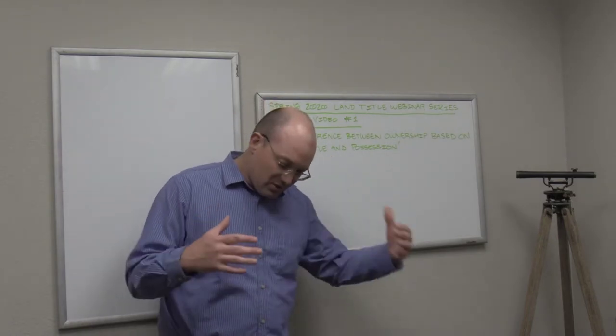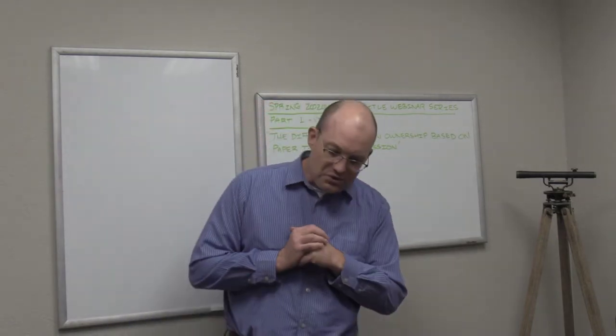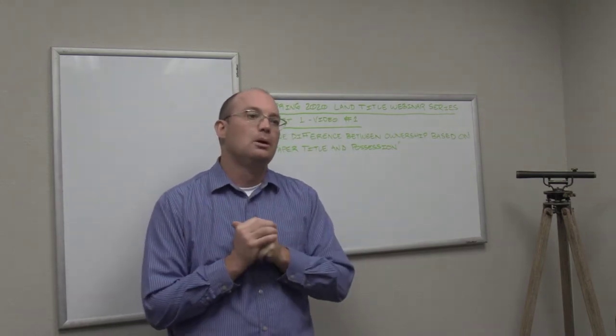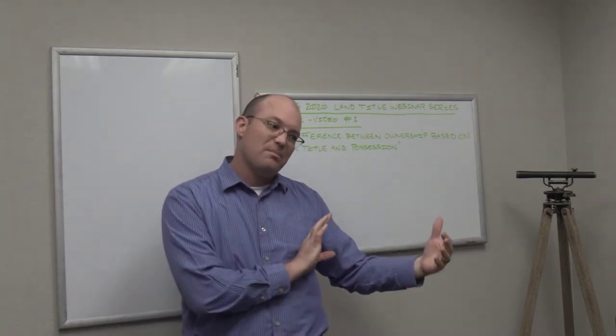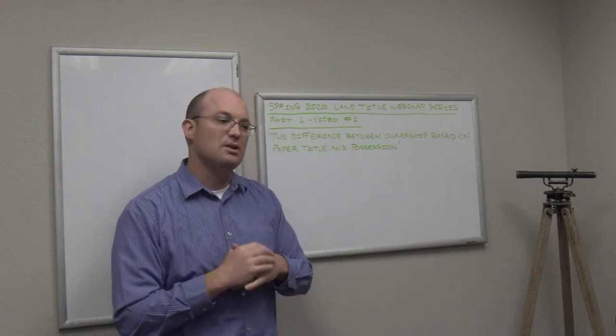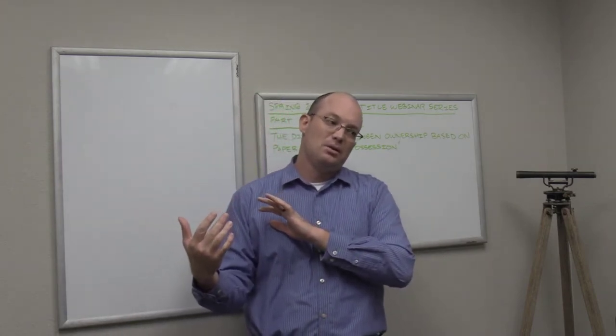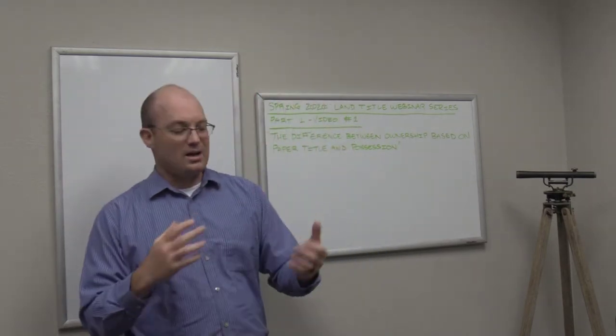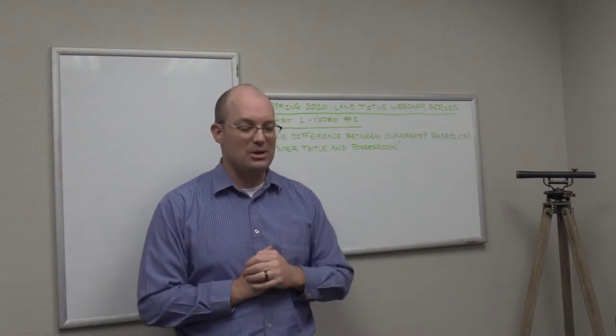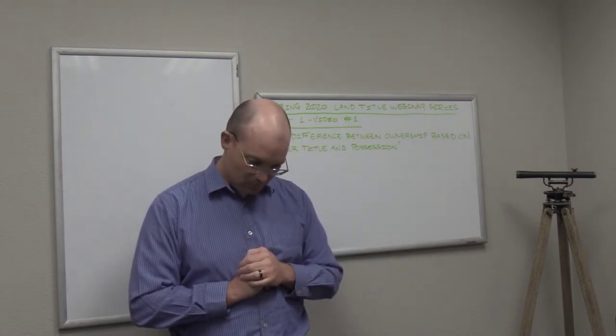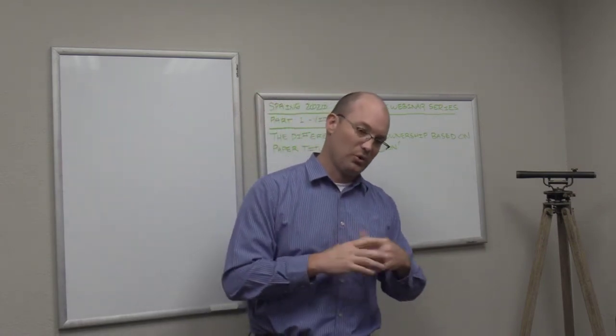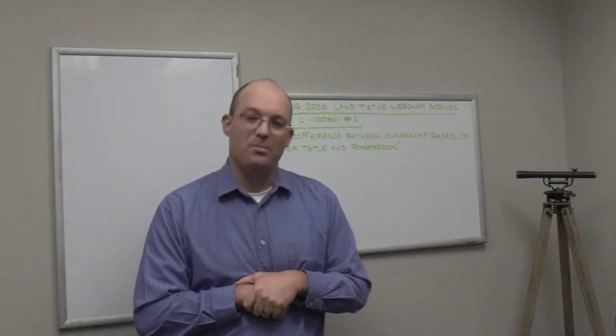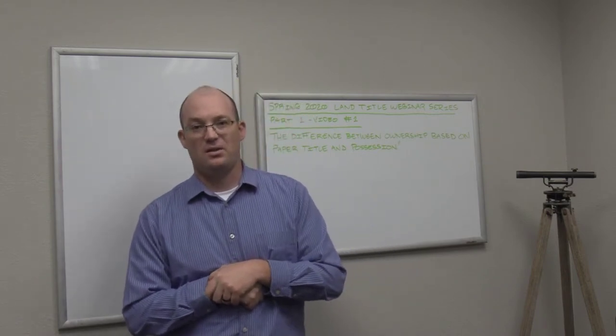Throughout history there's been basically two systems of ownership in the law. One is ownership that's based on possession of the property, and another is based on usually some kind of paper title. Let me try and explain the difference. We talked about personal property in the last video. In most places around the world including the United States, we have this expression you may have heard: possession is nine-tenths of the law.